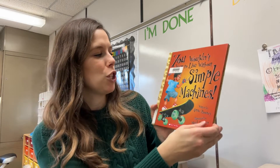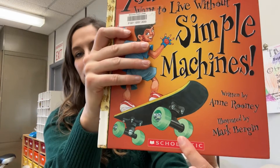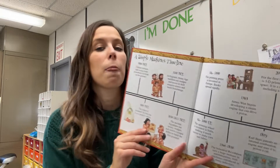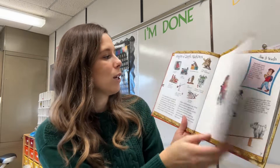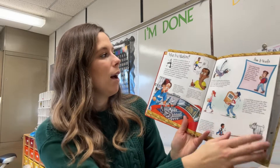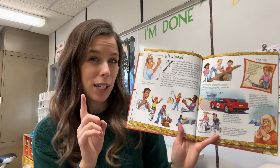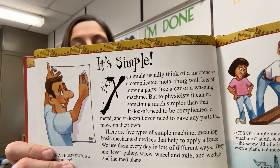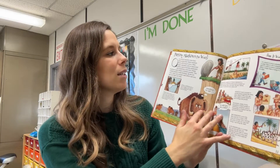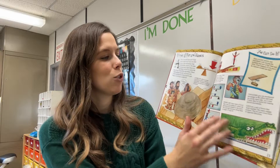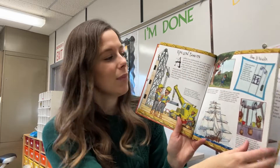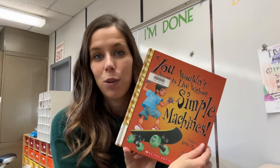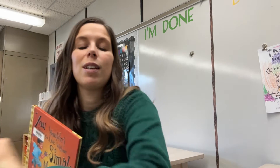This book is called You Wouldn't Want to Live Without Simple Machines, written by Anne Rooney, illustrated by Mark Bergen — a Scholastic book. What I like is that it gives you a timeline of simple machines and goes into the history of how they've developed, right up to present day things like 3D printers. What I don't like is that the print is smaller and it's very text-heavy, so it's not the best for kids learning to read. But I love the imagery and the historical context. I would use this one during my daily five rotations as a reference.